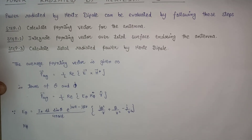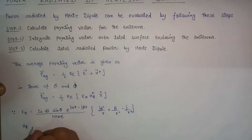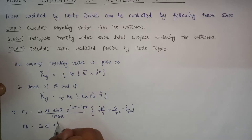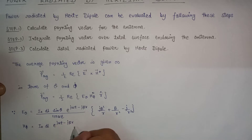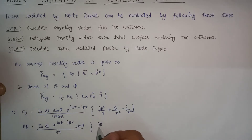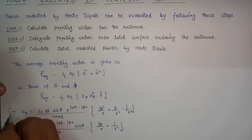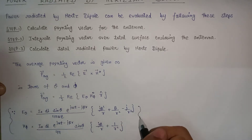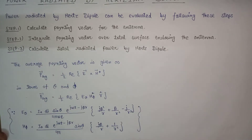Similarly, we also evaluated the value of H_phi. The expression for H_phi equals I-naught DL e^(j*omega*t - j*beta*r) sin(theta) divided by 4*pi, multiplied by j*beta over R plus 1 over R-squared. These are the electric field and magnetic field components for theta and phi evaluated in the earlier lecture.